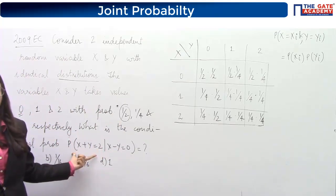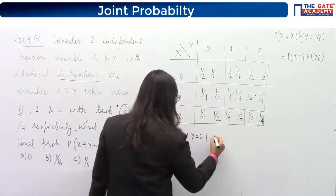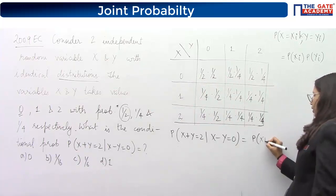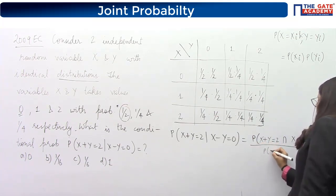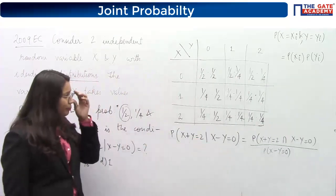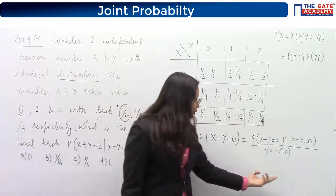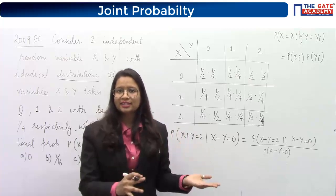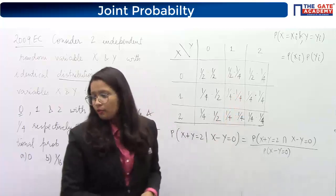Now let's address the conditional probability question. The conditional probability formula gives us the intersection of the two events divided by the probability of the condition imposed. Here the condition is X − Y = 0, which means X = Y. Let's first work on the denominator: P(X − Y = 0).